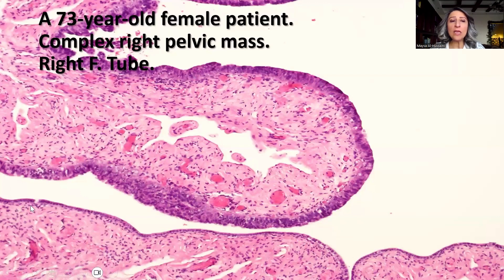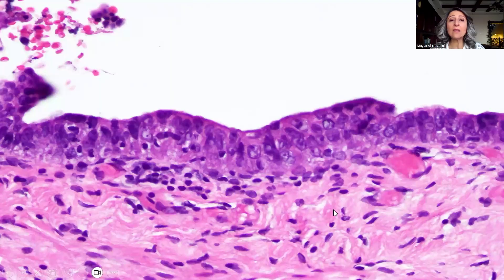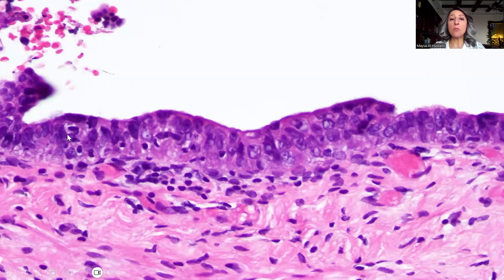If we look here, this is the usual normal lining of the Fallopian tube, which contrasts beautifully with the areas here, where on high-power magnification we have stratification, hyperchromasia, loss of polarity, and another focus where we have rounding of the nuclei, prominent nucleoli, and stratification with loss of polarity.